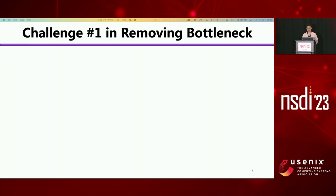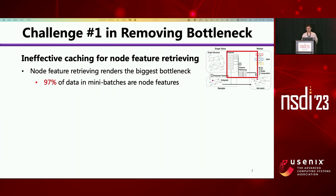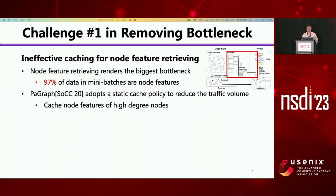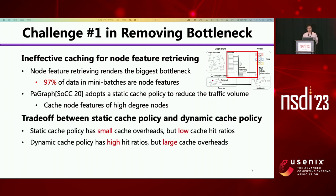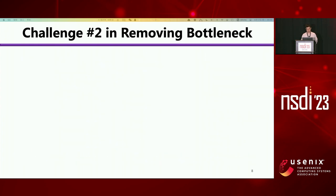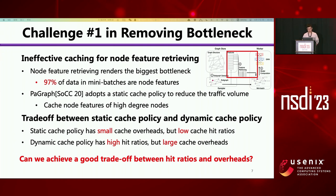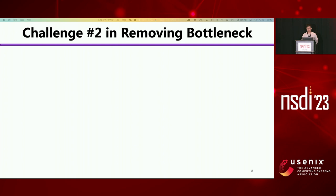We identified three challenges in removing the pre-processing bottleneck. The biggest bottleneck comes from feature retrieving — 97% of the data in mini-batches are node features. State-of-the-art work PyGraph adopted a static cache policy by caching features of high-degree nodes. Static means no replacement at runtime. However, there is a trade-off between static and dynamic cache policies. Static cache has small overhead but a low cache hit ratio, while dynamic cache has high hit ratios but large cache overhead. The question is: can we achieve a good trade-off between cache hit ratio and cache overhead?